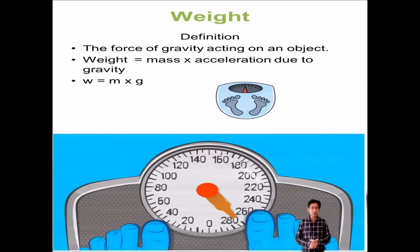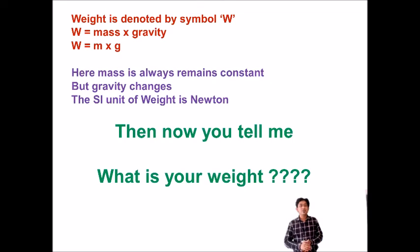For example, if my mass is 60 kg, then what about my weight? Weight equals mass into gravity. We have to multiply by the gravity value, which is 9.8. Consider it as 10, then 60 into 10 becomes 600. So my weight is 600 Newton, not 60 kilogram. So think about that.